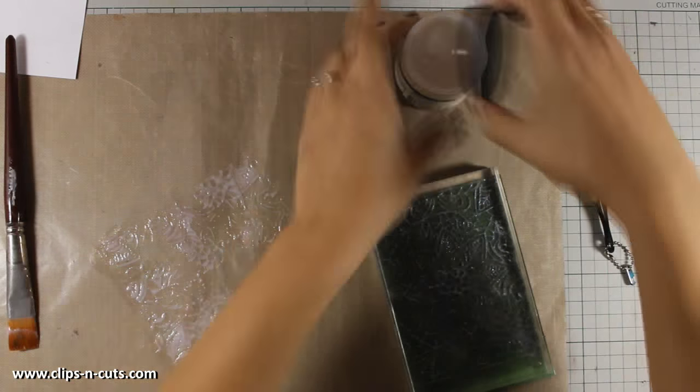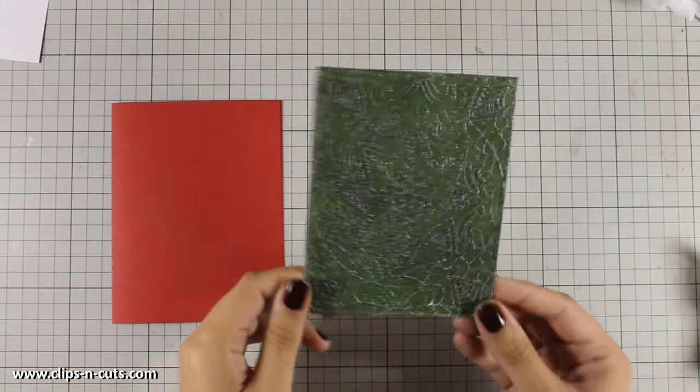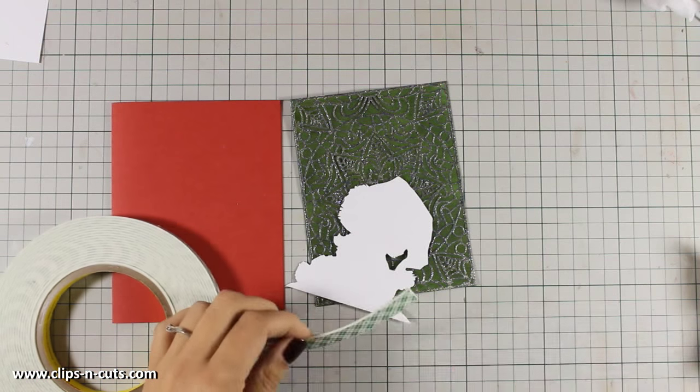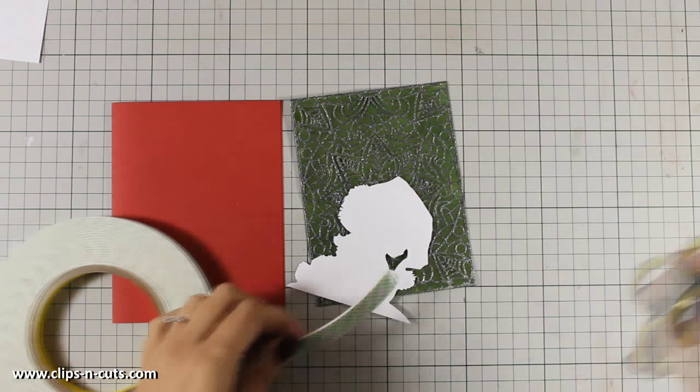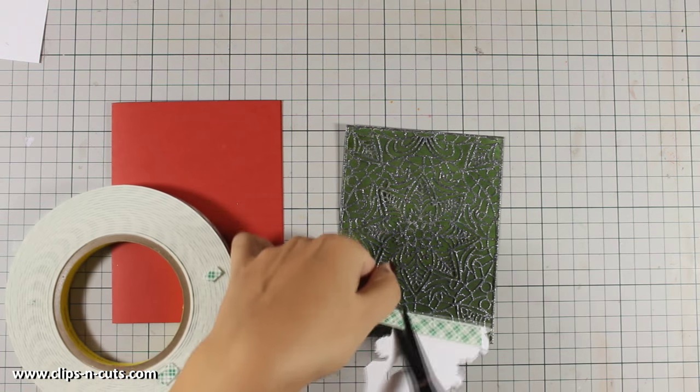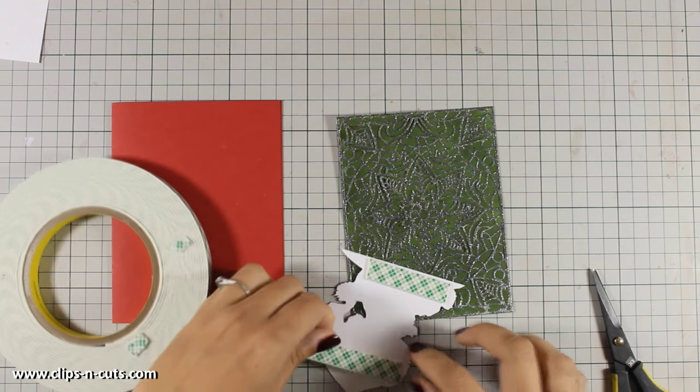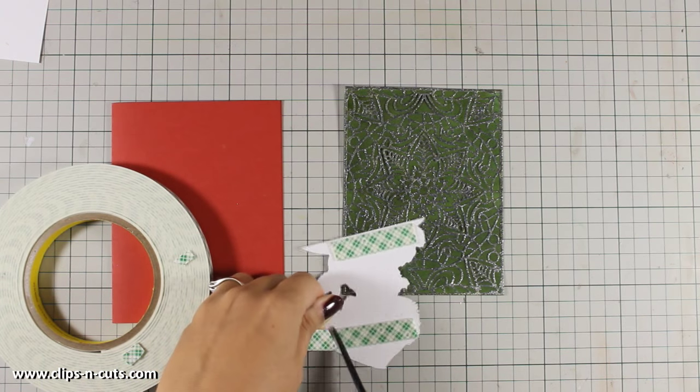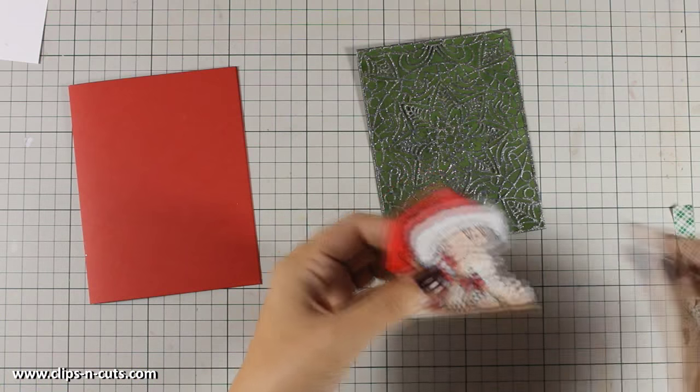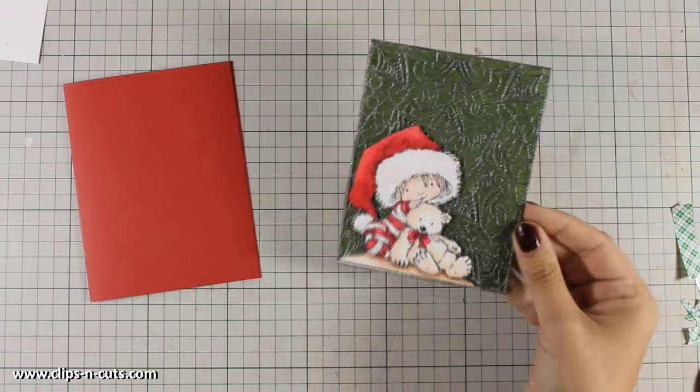I have put a stamping block on top just to make sure that everything is nicely pressed down and now I am going to stick my focal point on top of my panel. I am using some foam tape at the back which is going to hold my image nicely and at the same time it is going to add a little bit of dimension. I am going to stick it at the very bottom of my card.